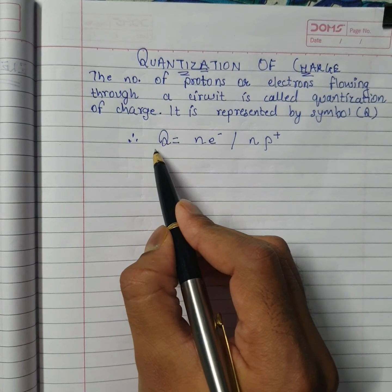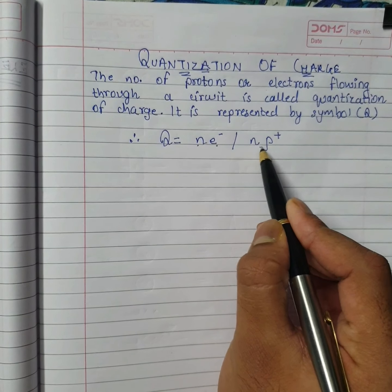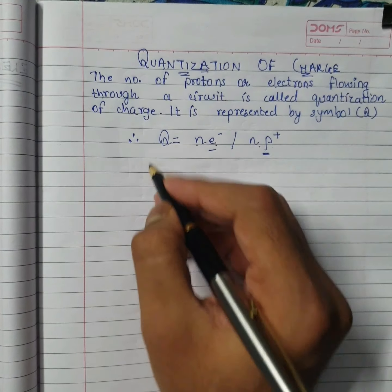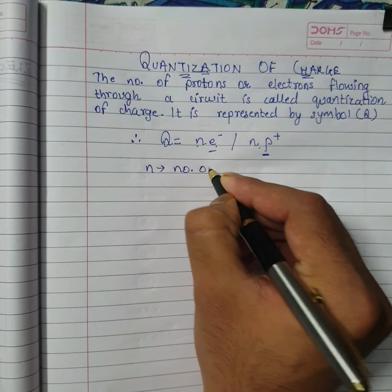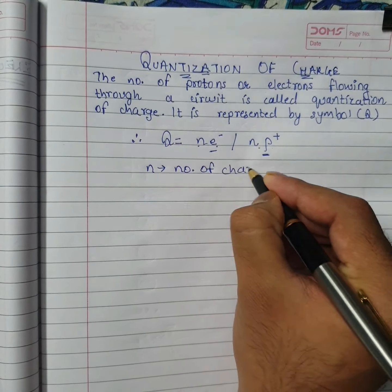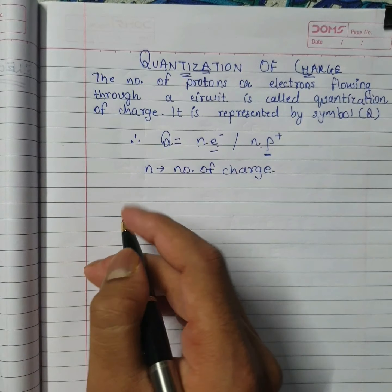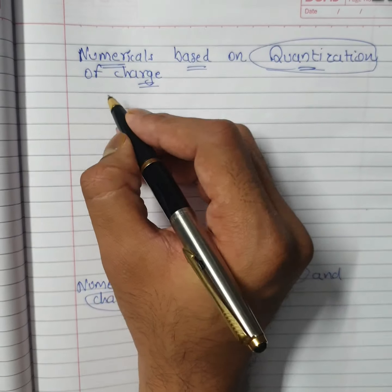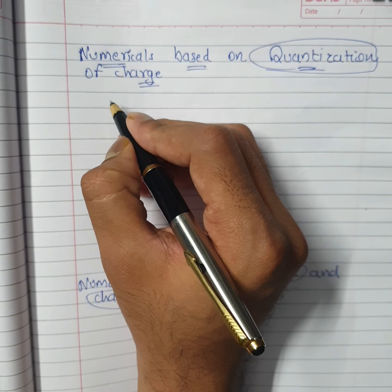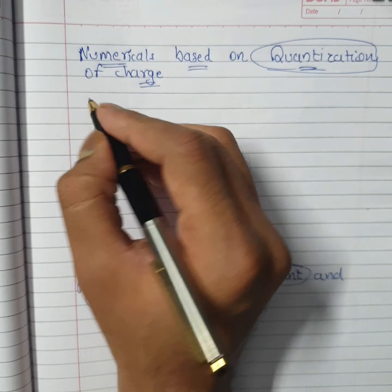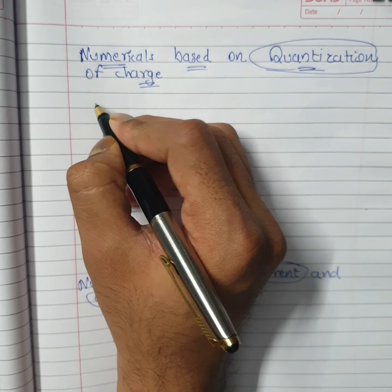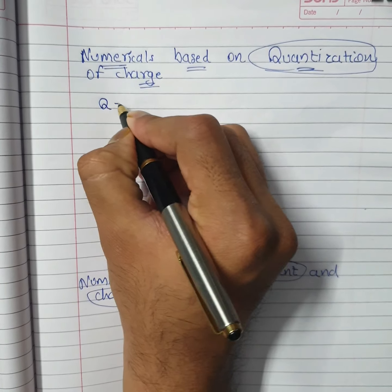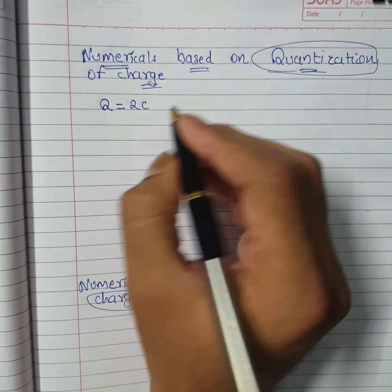What is quantization of charge? The number of protons or electrons flowing through a circuit is called quantization of charge, represented by symbol Q. The formula is Q = n × e (for electrons) or Q = n × p (for protons), where n is the number of charges. Numericals based on this are given in the textbook.